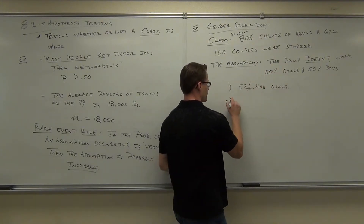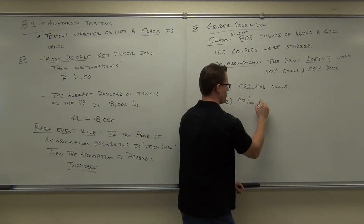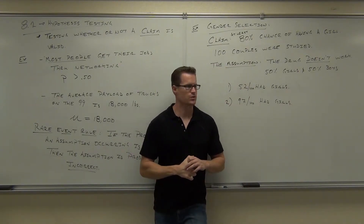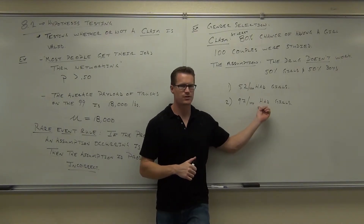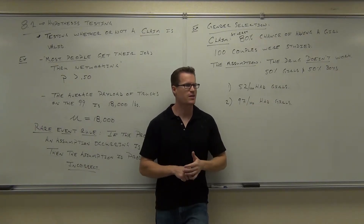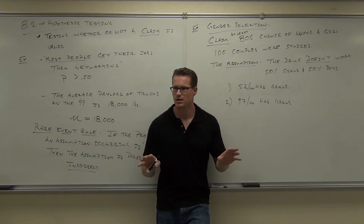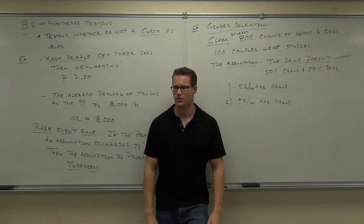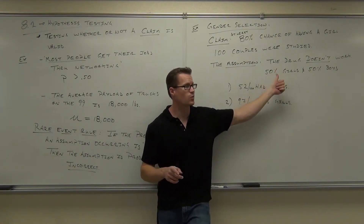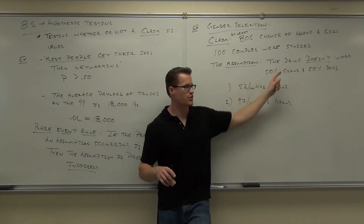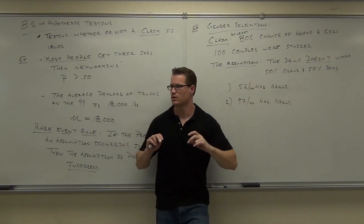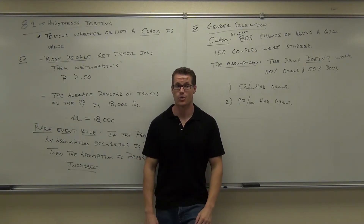Now check this example out. Let's say that 97 out of 100 had girls. Is 97 out of 100 way different than 50 out of 100? It's pretty significantly different. What are the chances that the drug doesn't work and 97 out of 100 had girls? That's really, really rare. This is way different. The probability of this happening, assuming the drug doesn't work, is very rare. If that probability is rare, then the statement 'the drug doesn't work' is probably false — meaning the drug works.